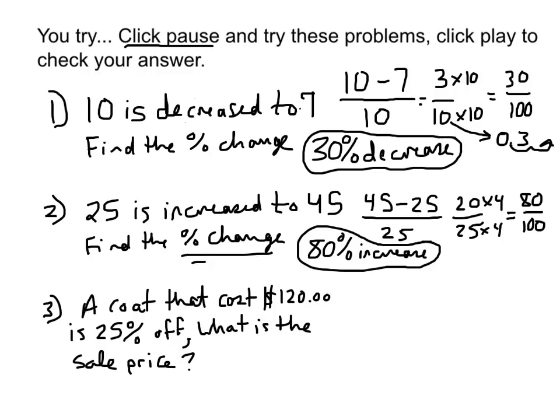Number three. A coat that costs $120 is 25% off. What is the sale price? So I need to find what amount of discount I get. If it costs $120 and I don't have to pay for 25% of it, I need to find out how much that discount is. I need to find out what 25% of 120 is. Of is times. 25% is 0.25. So I have to do 0.25 times 120. And I have to subtract that from 120.